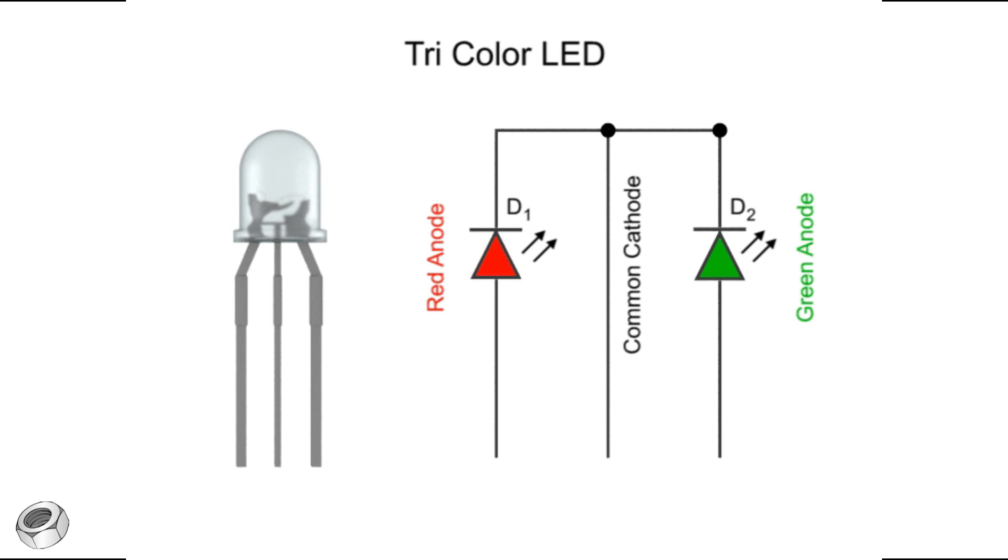However, because the two anodes are wired separately, it is possible to apply positive voltage to both wires. In this case, the LED gives off a third color, a mixture of the two. This color is often an amber color.